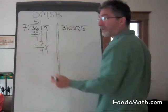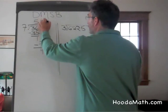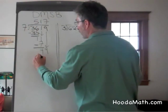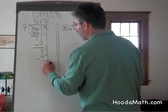7 evenly divides into 49, 7 times. 7 times 7 is 49. And there's a remainder of 0.